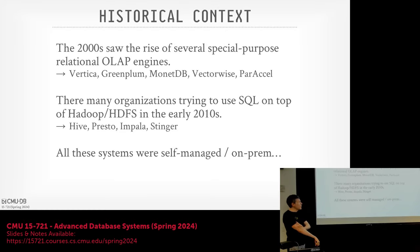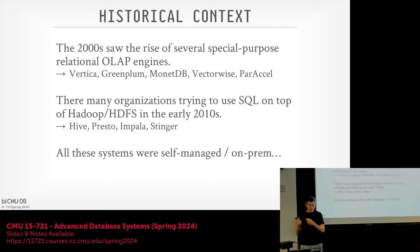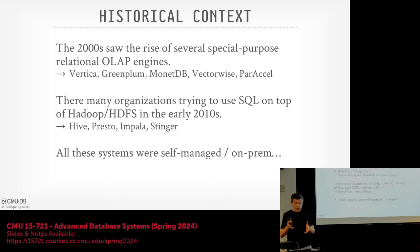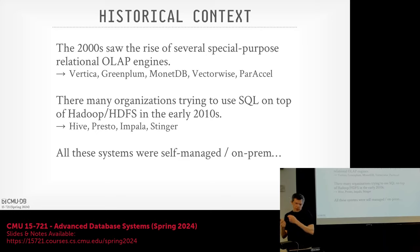Before we jump into Snowflake, it's important to take a step back and understand what the database landscape looked like when Snowflake came on the scene. In the 2000s, specialized OLAP systems were built just to run analytical workloads. For the most part, a lot of them pushed the idea of a column store. Vectorwise came along in the later 2010s, but everyone was operating in column stores with compressed data.